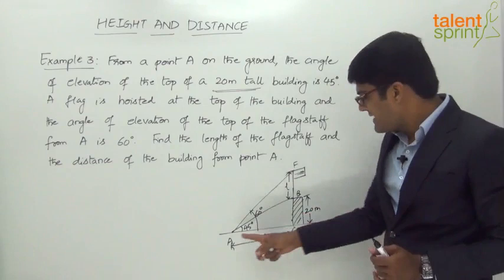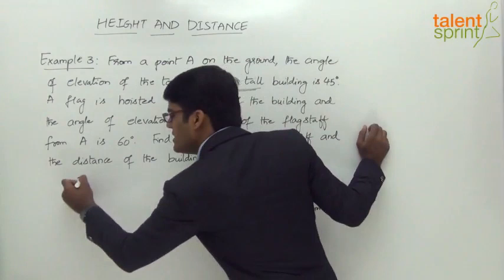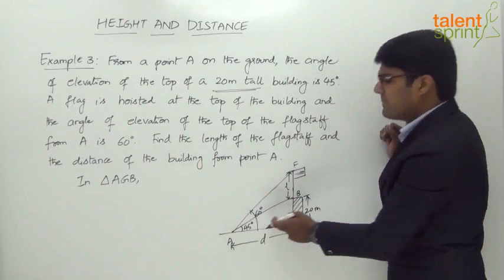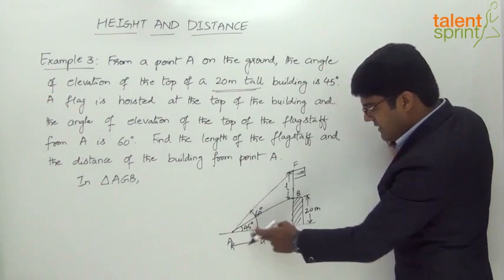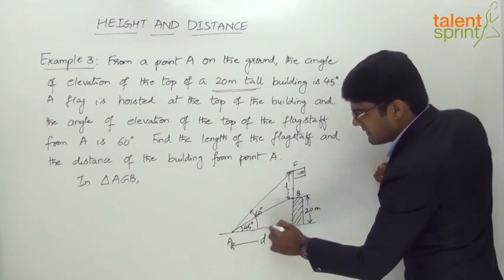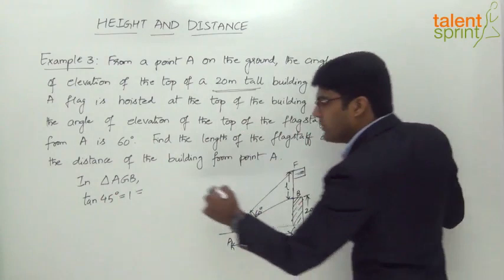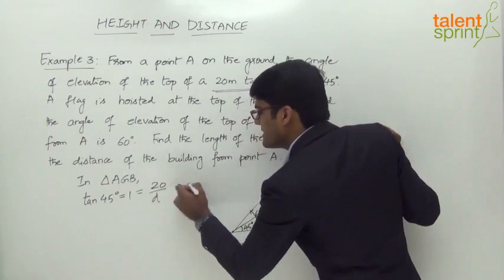We have two right-angle triangles. In triangle AGB, the angle at A is 45 degrees. Applying tan 45: tan 45 = opposite/adjacent = 20/D. Since tan 45 = 1, we get 1 = 20/D, so D = 20 meters. One part of the question is answered: the distance of the building from point A is 20 meters.